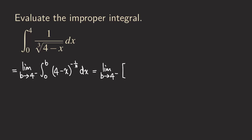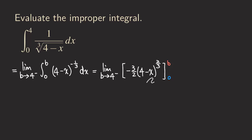Now we are ready to integrate. To find the antiderivative of four minus x to the negative one-third, we add one to the power to get two-thirds as the new power. We multiply by the reciprocal of the new power, but we also need to account for the chain rule — the derivative of the inner function introduces a negative sign, so we multiply by negative one. This gives us a coefficient of negative three-halves. The antiderivative is evaluated from zero to b.